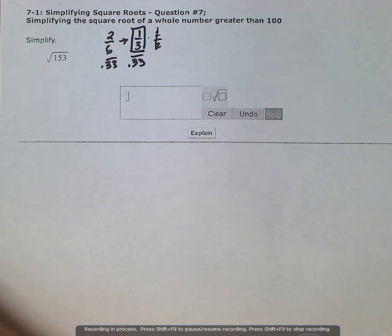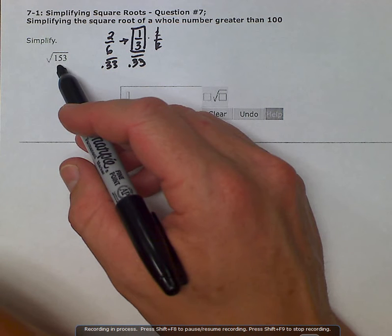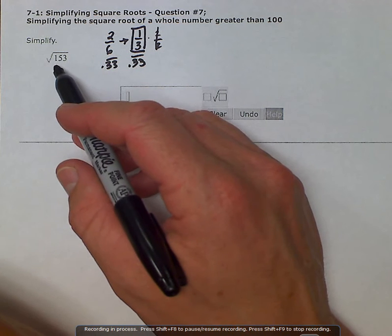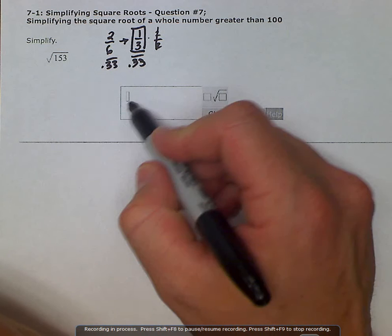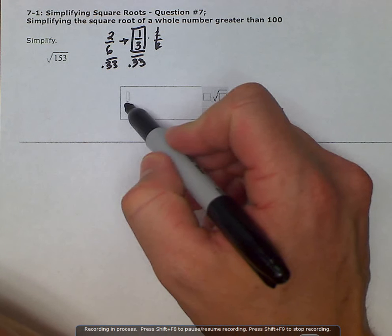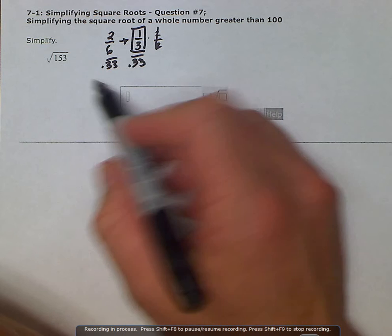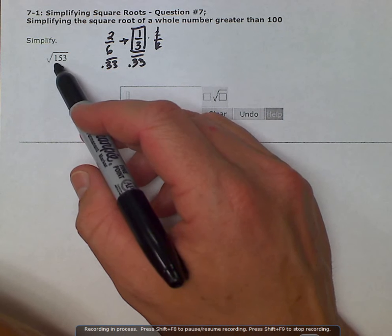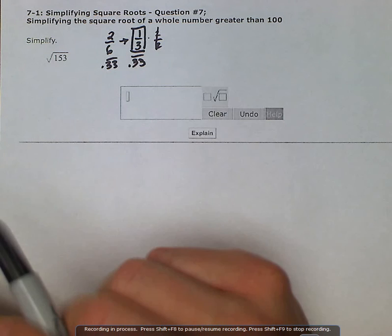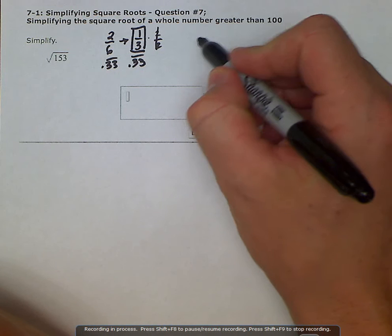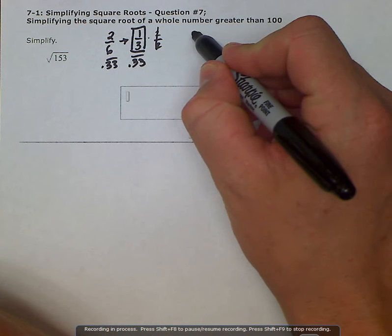So this is what it's asking us to do: write this in a more simplified version. It's not asking us to just plug it into the calculator and get a decimal approximation. It's asking us to simplify it like we would reduce a fraction. So let's look at a different example in order to understand how to do this.